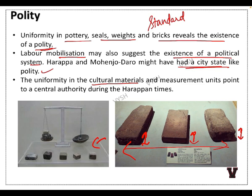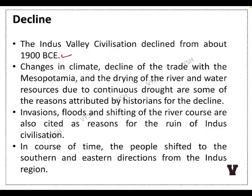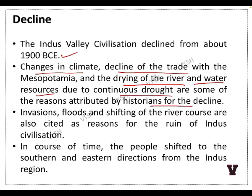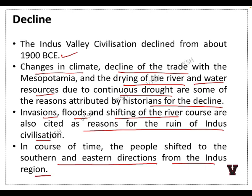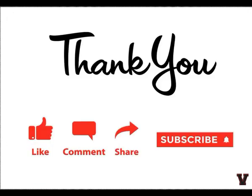The decline happened around 1900 BCE. Reasons attributed by historians include climate change, decline of trade with Mesopotamia, drying of rivers and water resources due to continuous drought, invasions, floods, and shifting of river courses. In course of time, people shifted to southern and eastern directions from the Indus region. This concludes the first chapter.